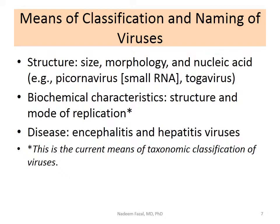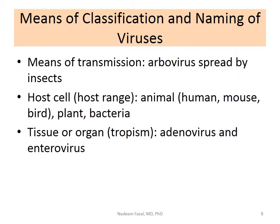Clinically, especially in clinical virology, we divide viruses by the organs or tissues they infect. For example, encephalitis viruses cause damage to brain cells; hepatitis viruses go to the liver and destroy liver cells. We also divide them by transmission route — arboviruses are spread by arthropods. Some viruses infect animals, humans, birds, or even plant cells. We also have bacteriophages, which are viruses that infect bacteria. Viruses have tropism — they look for specific cells to attach to. For example, adenoviruses attach to adenoids; enteroviruses attach to intestinal enterocytes.